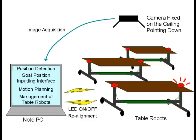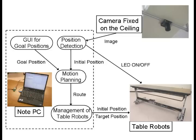A table in a room is equipped with an omnidirectional motion mechanism. A computer sends motion commands to the table robots. A camera on the ceiling detects each position of the table robots. The goal position is given by GUI software on the Note PC.